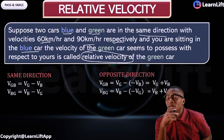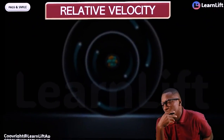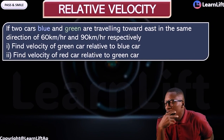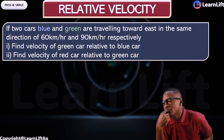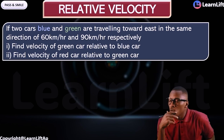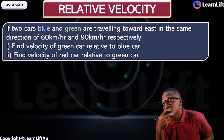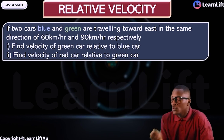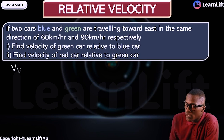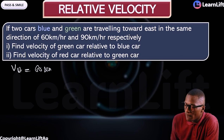Let's take one or two past questions to reinforce this point. Two cars — blue and green — are traveling east in the same direction at 60 km/h and 90 km/h respectively. First, find the velocity of the green car with respect to the blue car. The velocity of the blue car is 60 km/h.